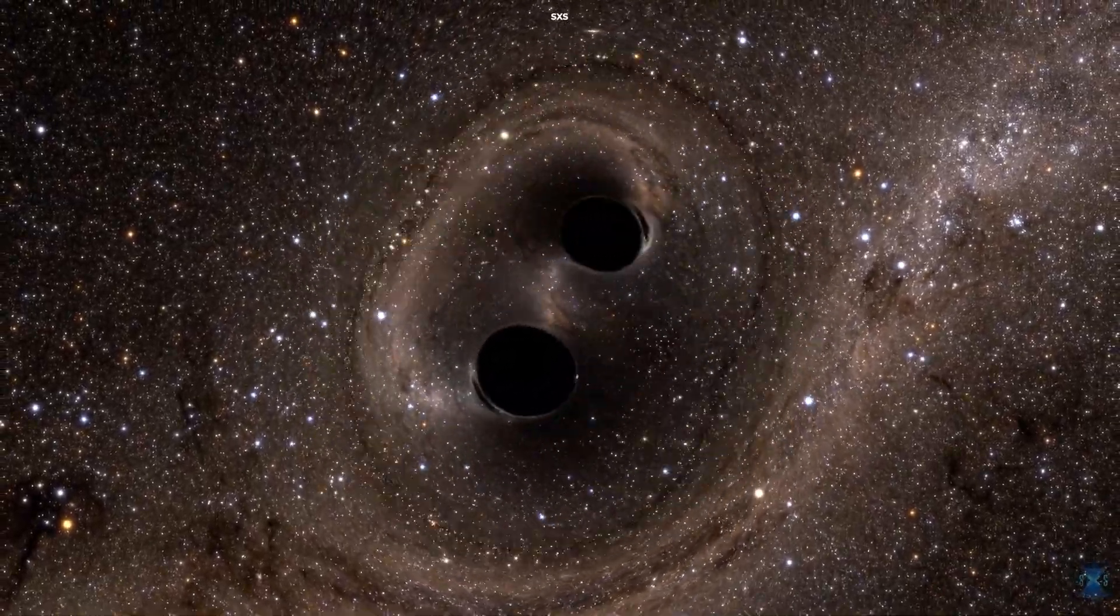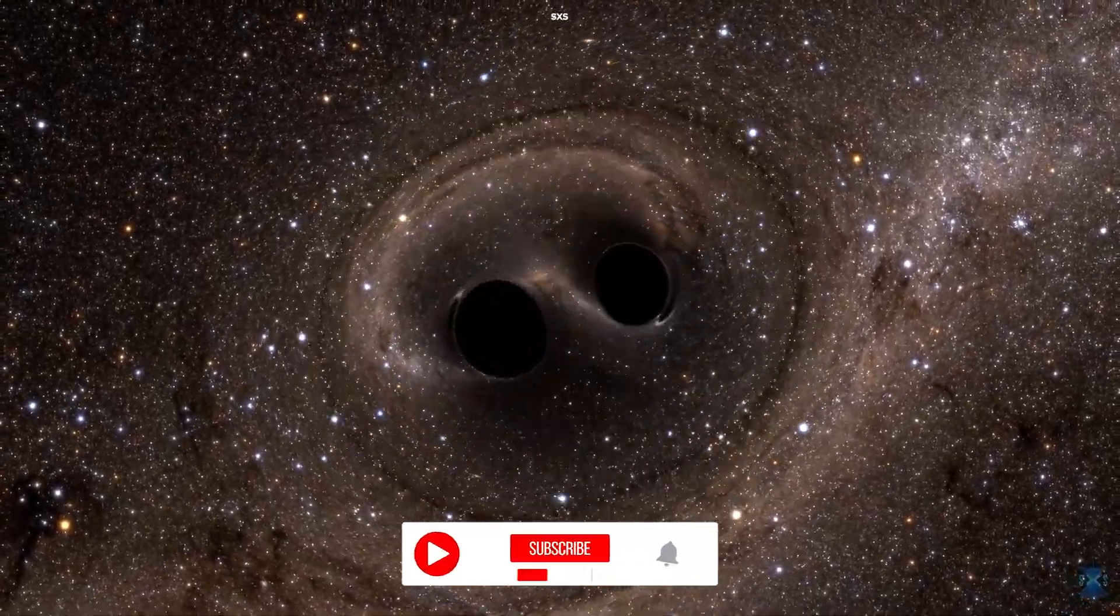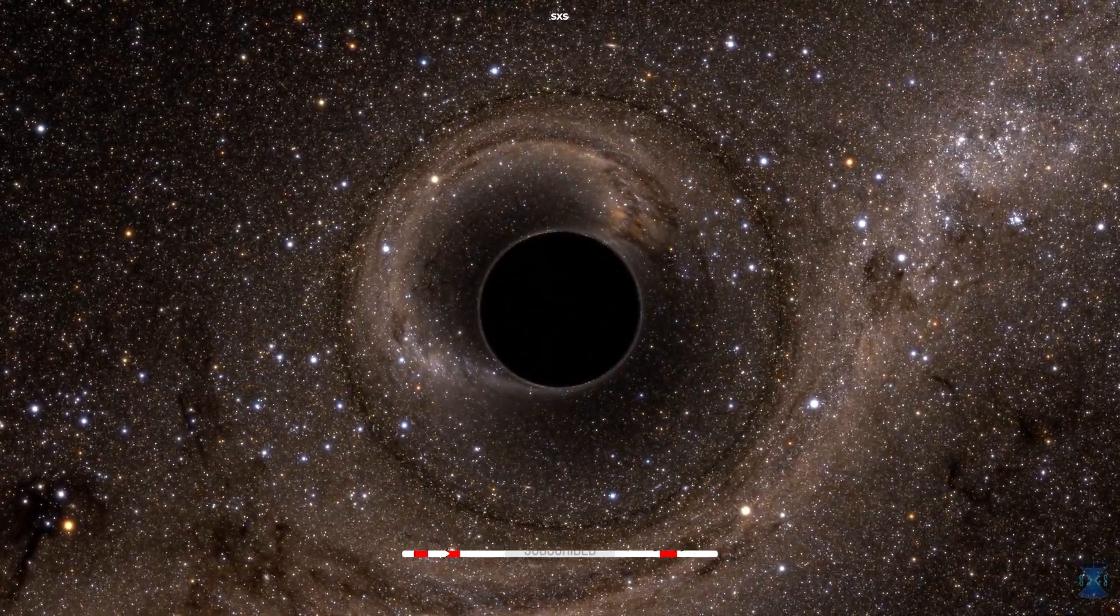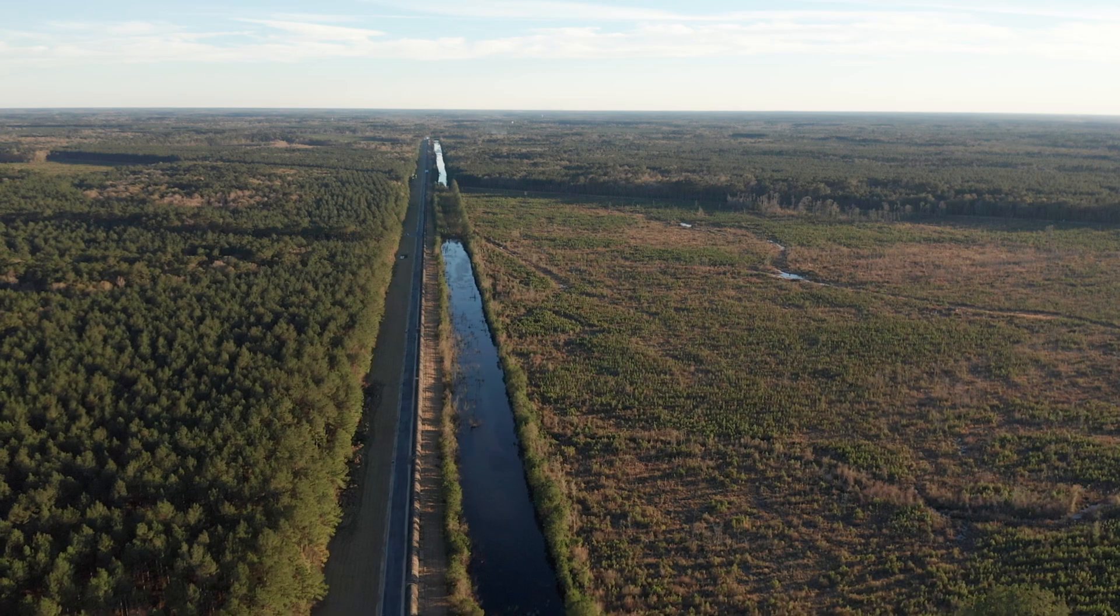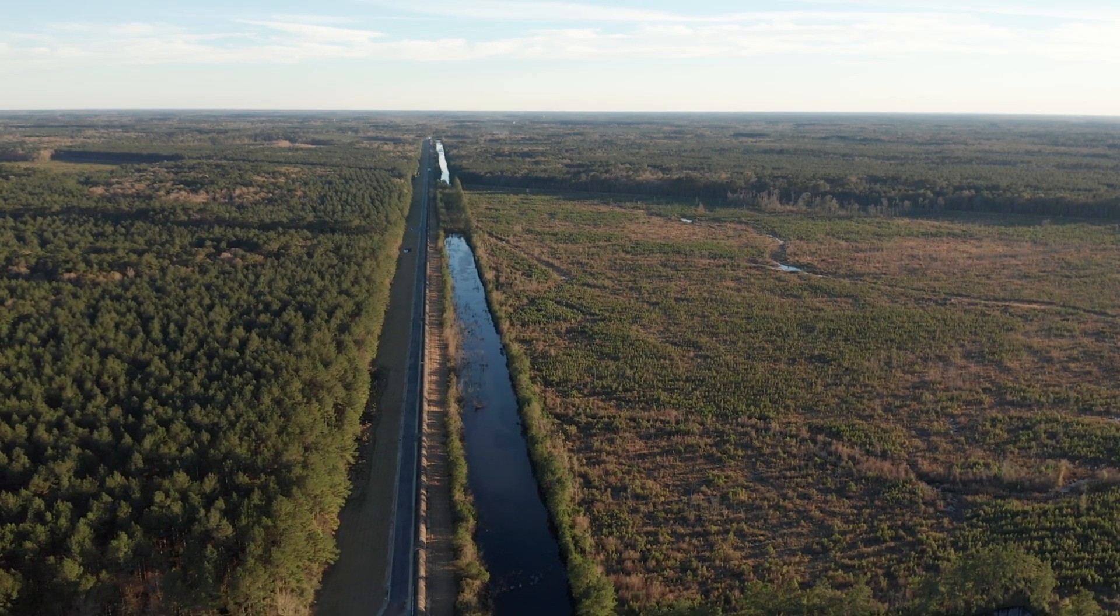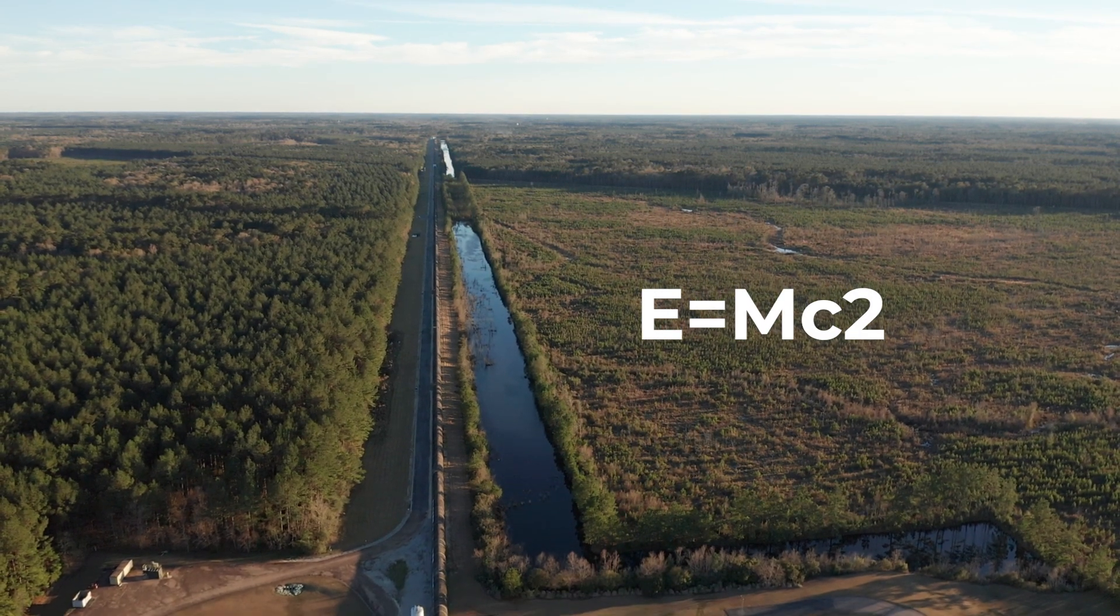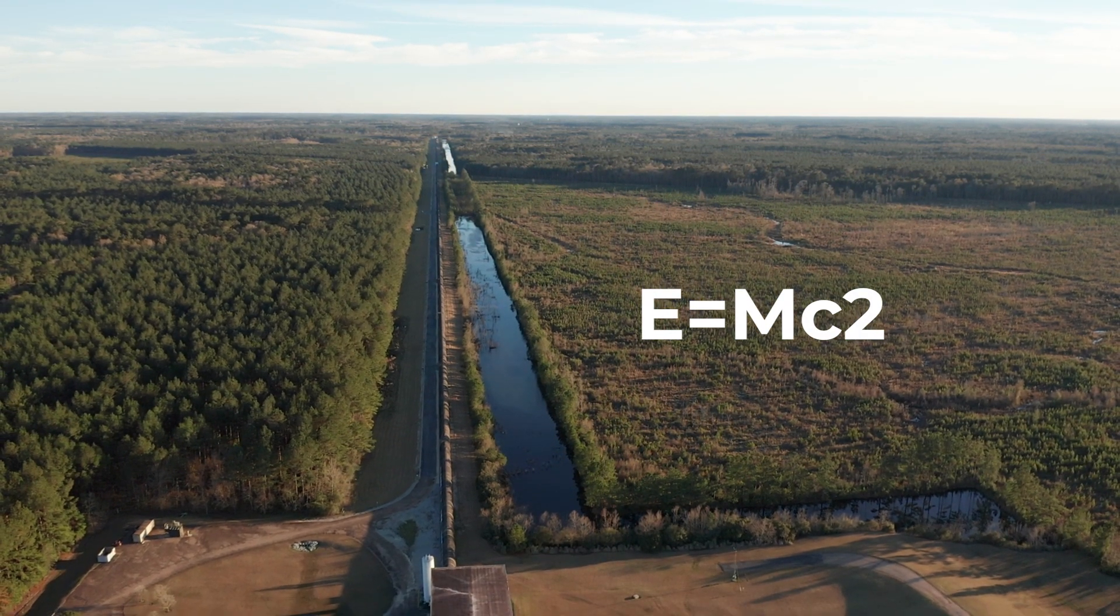But the merger of these 65 solar masses in total created a remnant of just 62. So what happened to the other three? These were used to power the burst of gravitational waves in a spectacular demonstration of Einstein's famous formula, E equals mc squared, where mass and energy are equivalent.